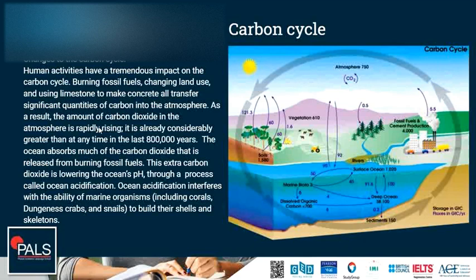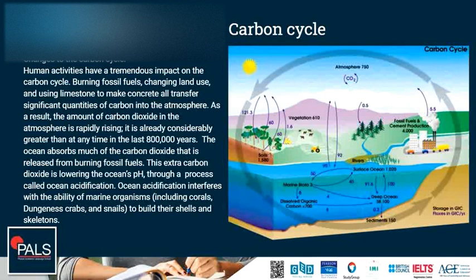Human activities have a tremendous impact on the carbon cycle. Burning fossil fuels, changing land use, and using limestone to make concrete all transfer significant quantities of carbon into the atmosphere. As a result, the amount of carbon dioxide in the atmosphere is rapidly rising — already considerably greater than at any time in the last 800,000 years. The ocean absorbs much of the carbon dioxide released from burning fossil fuels, but this extra carbon dioxide is lowering the ocean's pH through a process called ocean acidification, which interferes with the ability of marine organisms, including corals, crabs, and snails, to build their shells and skeletons.